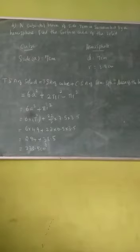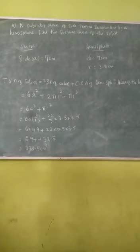Good morning students. Now we are going to the next question. A cuboidal block of side 7 cm is surrounded by a hemisphere. Find the surface area of the solid.